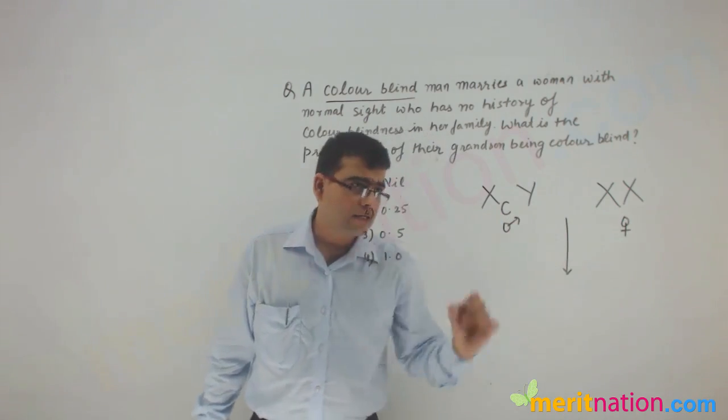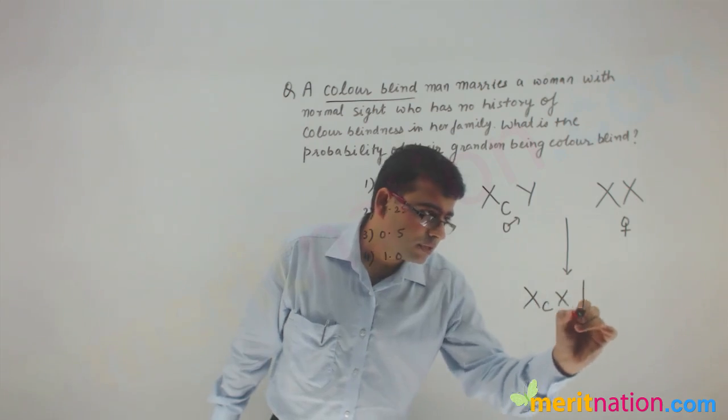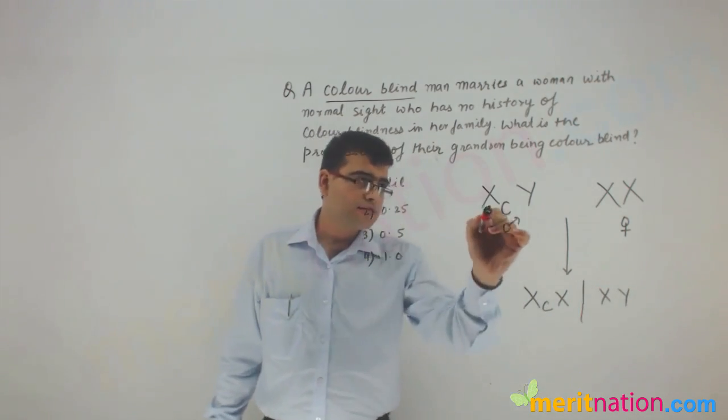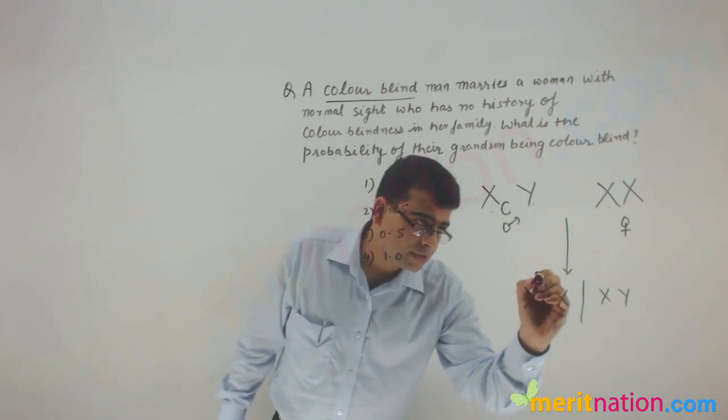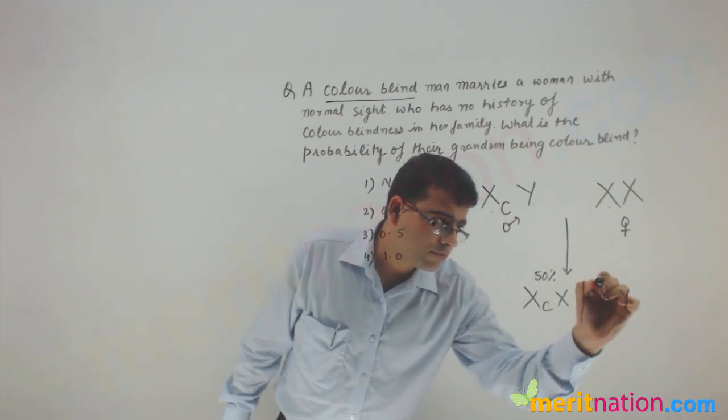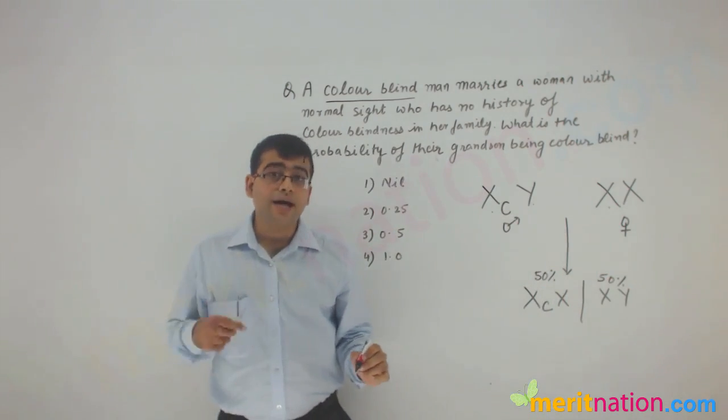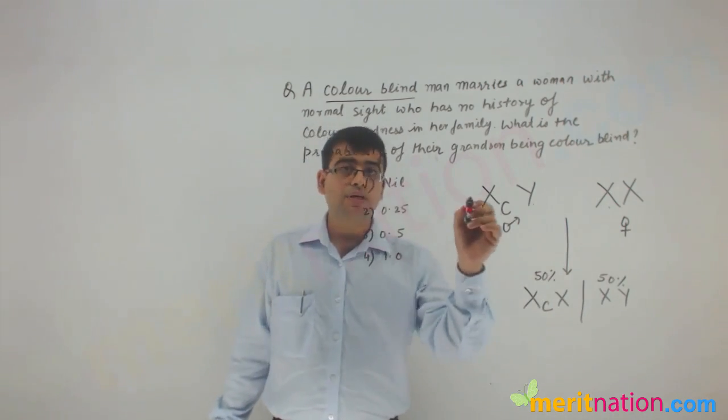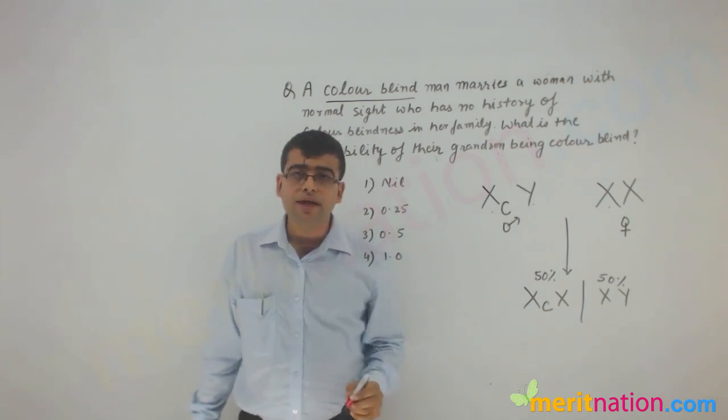Now let us see what we get. So you get two types of progeny, that means XcX and XY. So 50% carriers, 50% normal males. Now it is asking about the grandson. The question is asking about the grandson. What is the probability of their grandson being colorblind?